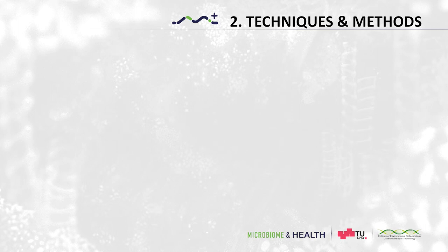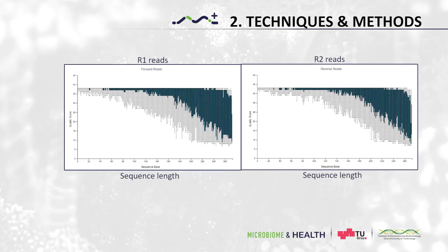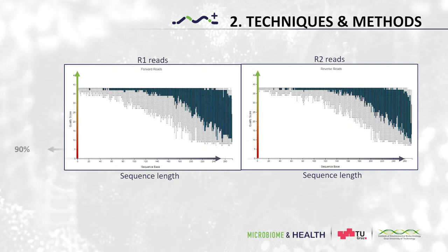We can assess the quality of the sequencing by plotting the quality score of the reads. On the y-axis we have the quality score from 0 to 40, and on the x-axis we have the sequencing bases. A quality score of 20 means that there is 90 percent probability that this base was called correctly, whereas a quality of 40 means there was 99.9 percent certainty that this particular base was called correctly.